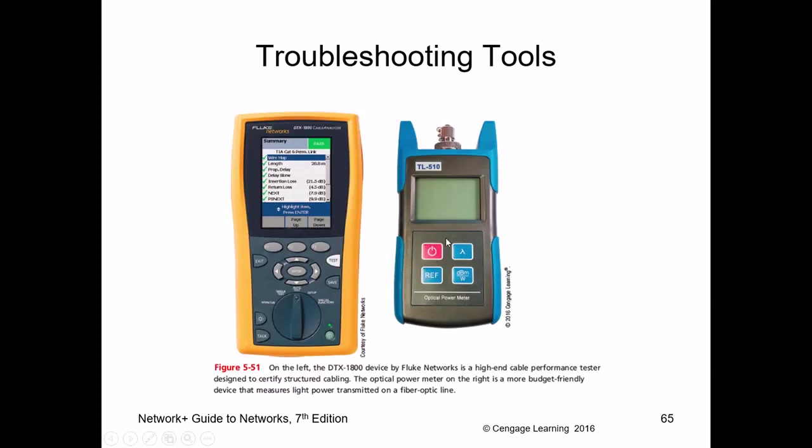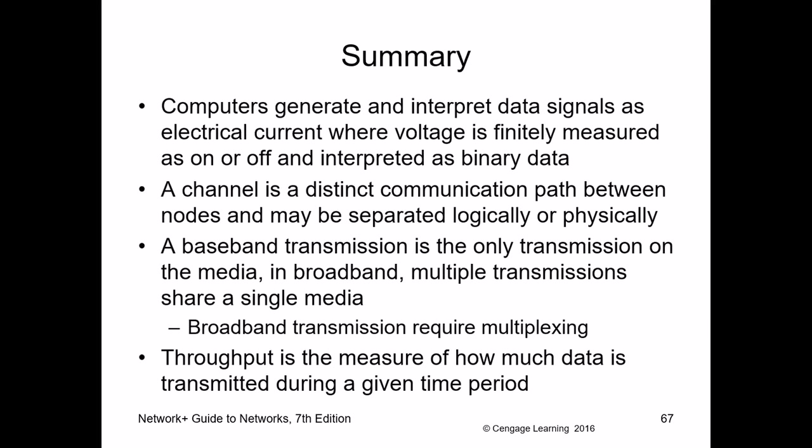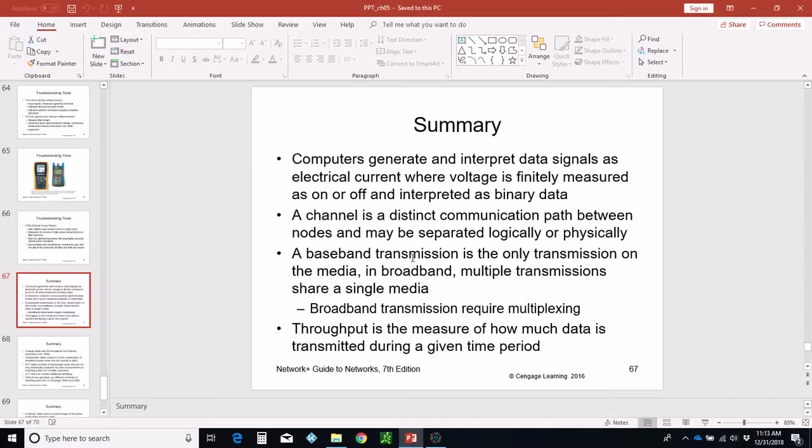The optical power meter (laser power meter or light meter) measures how much light is being transmitted through fiber. If the light is weak, it indicates the distance is too far or there's signal loss. That covers the transmission media chapter — write down everything covered and keep up with the homework. See you in the next chapter.